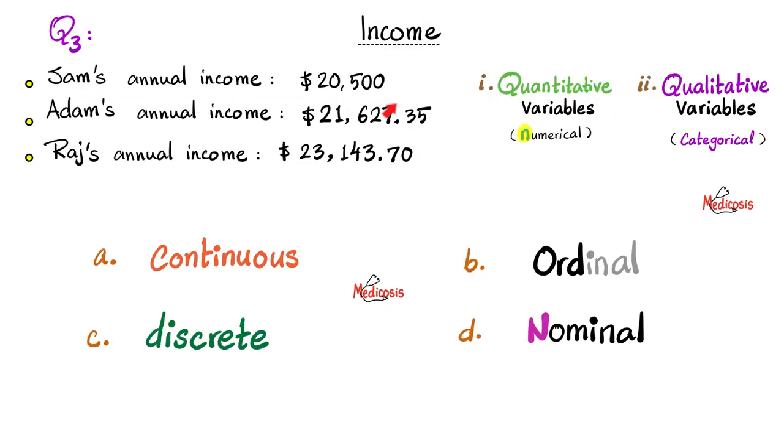Let's practice some more. Example, Sam's annual income is $20,500. Adam's annual income is $21,627.35. Roger's annual income is $23,143.70. First question, would you consider these examples of quantitative variables or qualitative variables? And the second question is, would you consider them A, continuous, B, ordinal, C, discrete, or D, nominal variables? Please pause the video and answer these two questions. Let's start with the first one. Quantitative or qualitative? Well, these are numbers. I can put a number on your income by definition, so this is quantitative or numerical. If it's numerical, then it cannot be ordinal or nominal. It has to be either continuous or discrete.